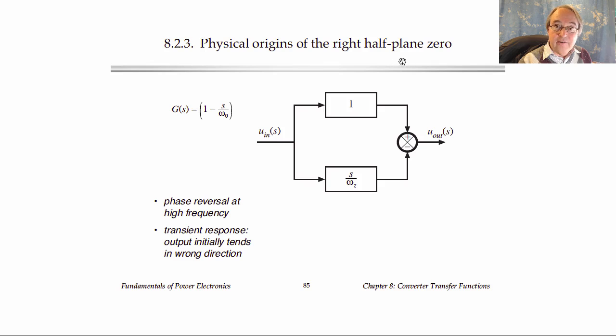And what I'd like to do now is briefly discuss where the right half plane zero comes from and what its nature is. It actually causes some serious problems in the dynamics of the converter that make it difficult to control. So, one way to view the right half plane zero is that at low frequency, the one dominates over the s over omega-zero term, and so the transfer function is one, which is positive.